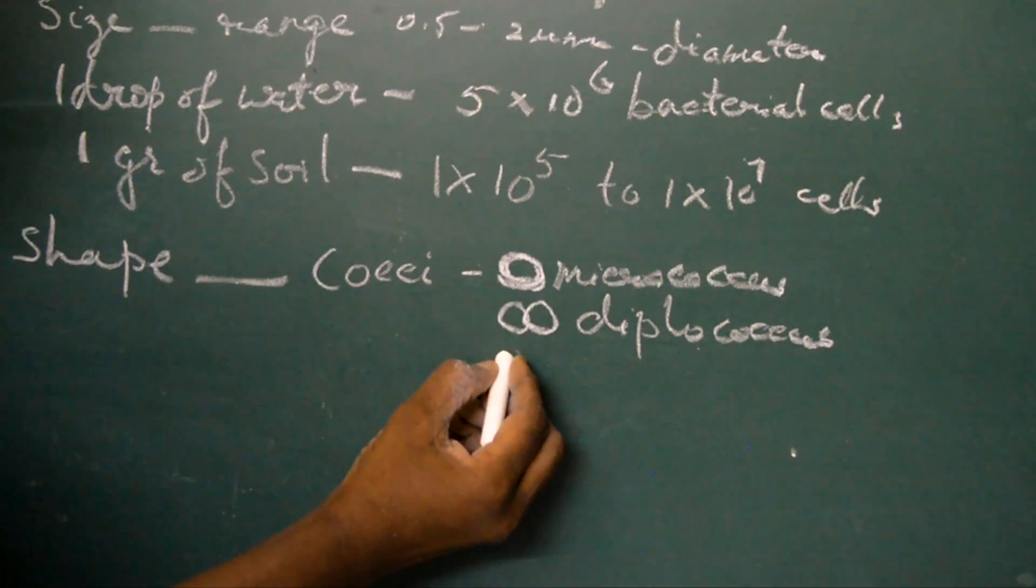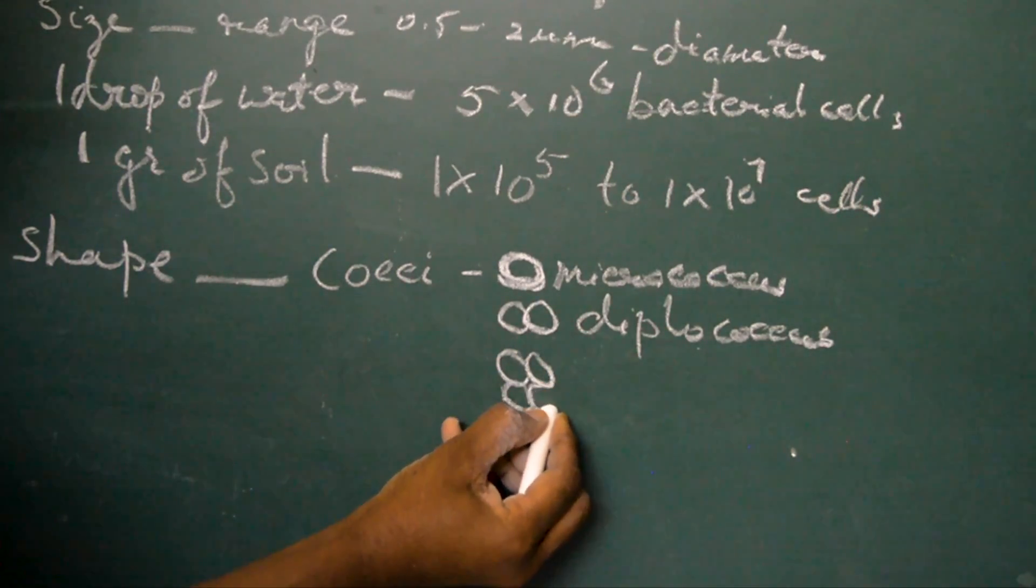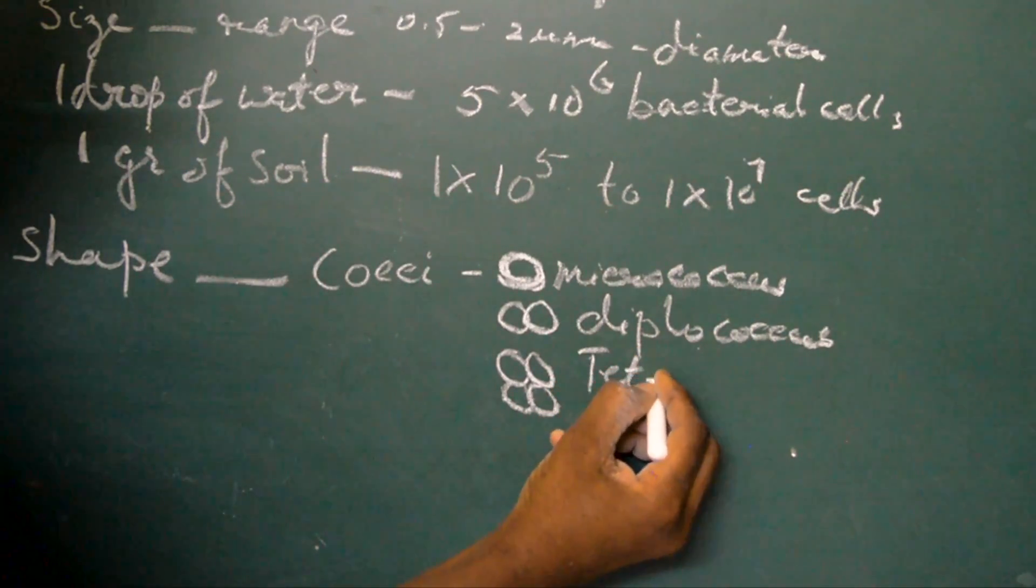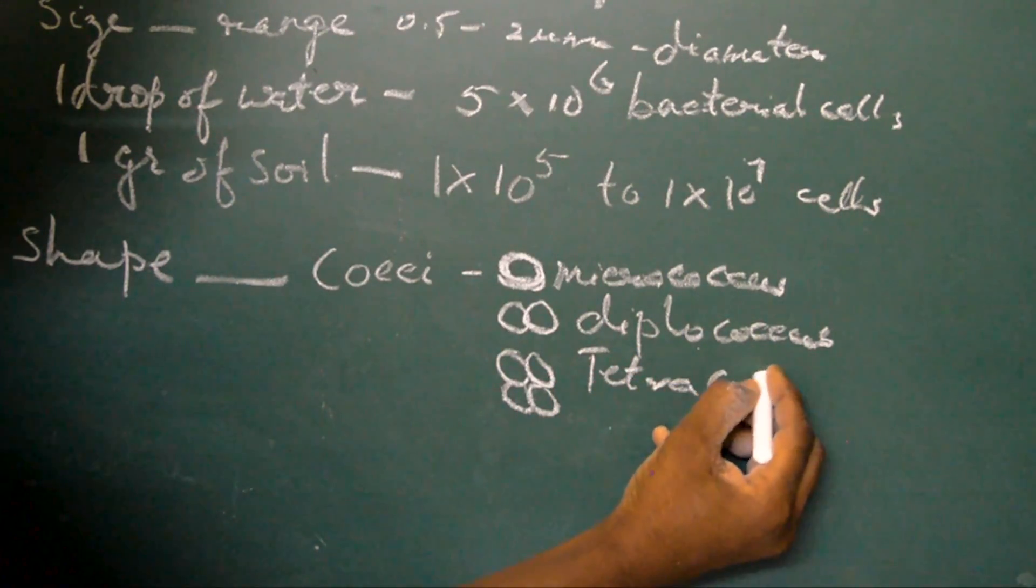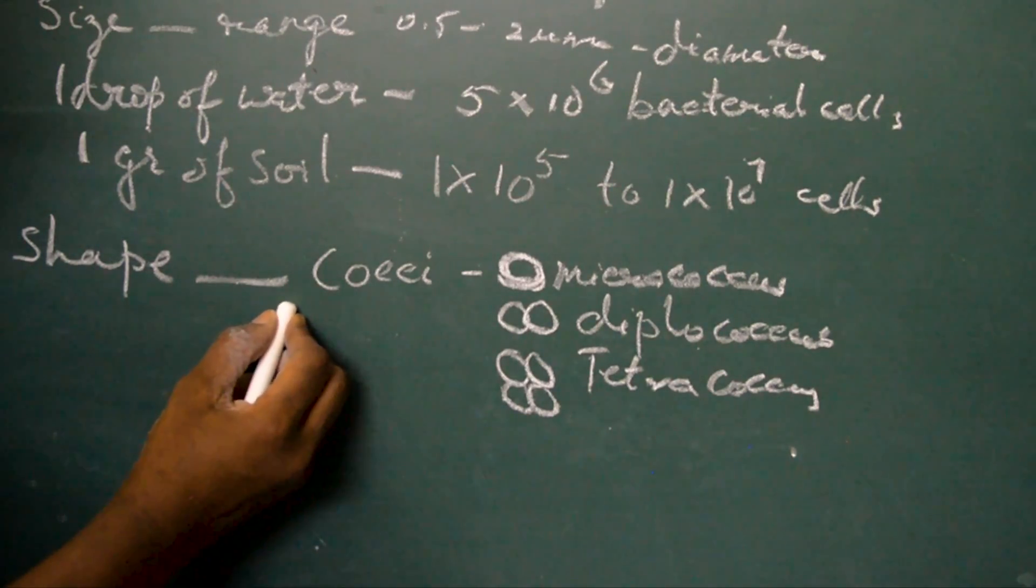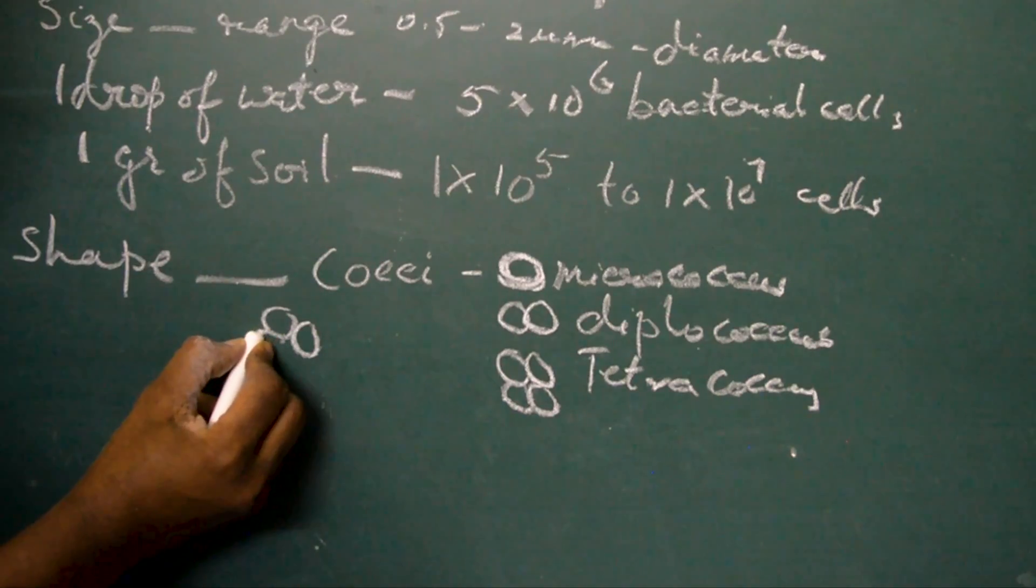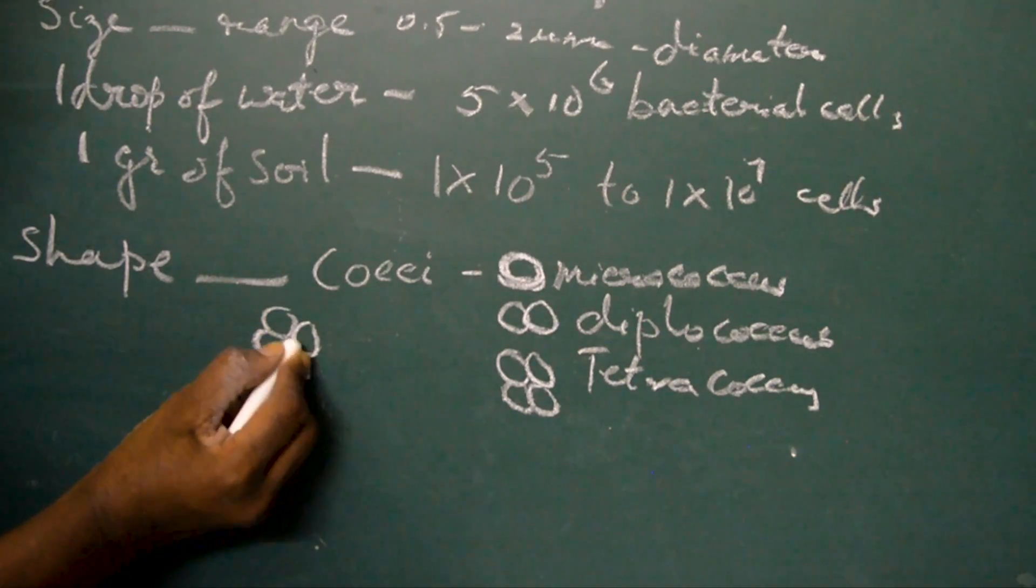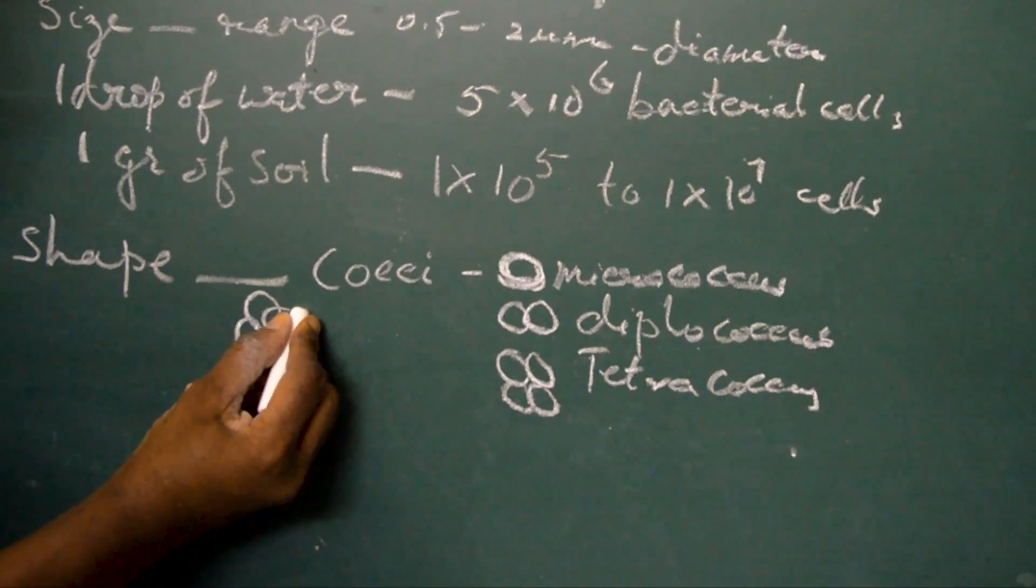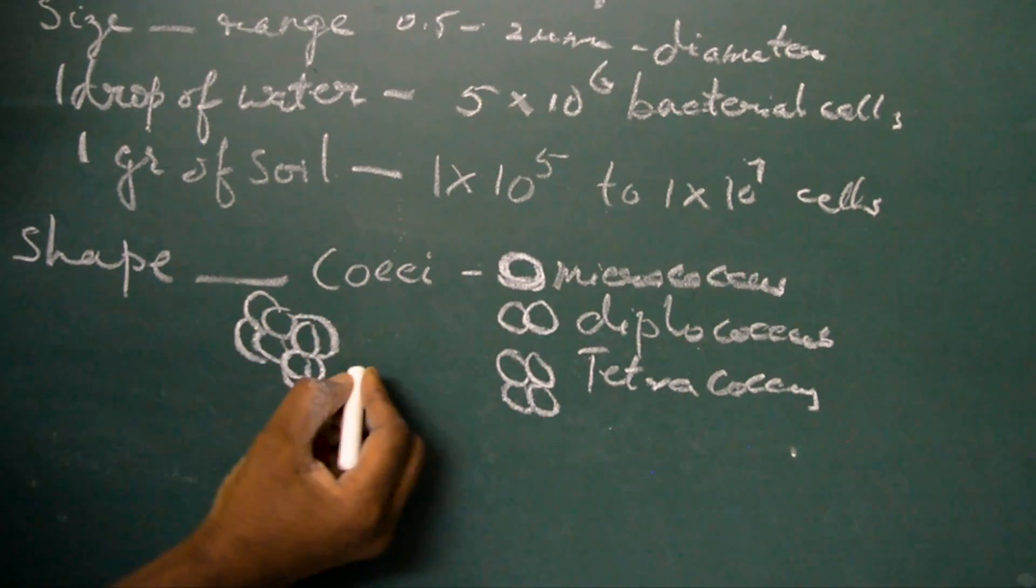If they occur in a cluster of 4 cells it is called tetracoccus. Some bacterial cells occur in clusters of 8 to 64 forming a cuboidal structure, and this is called sarsina.